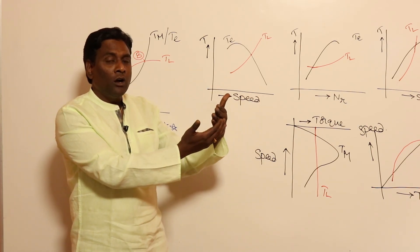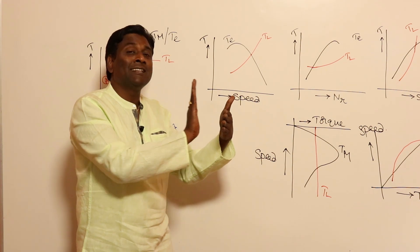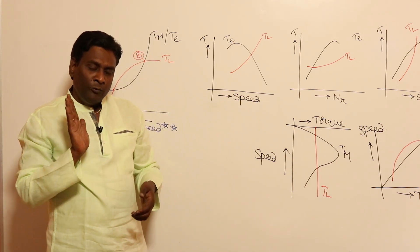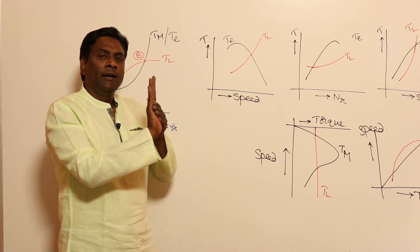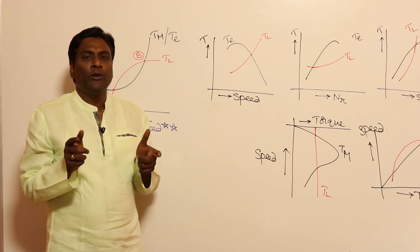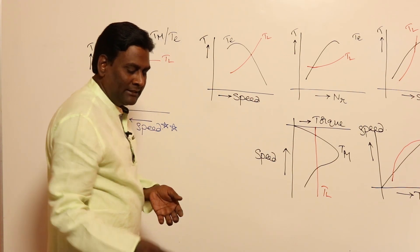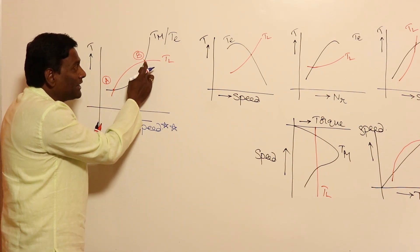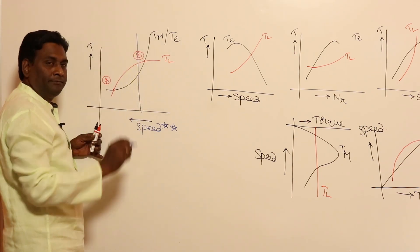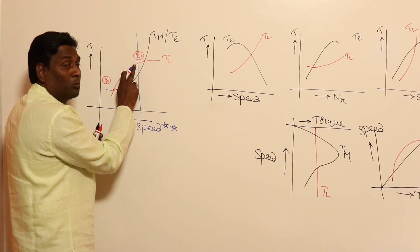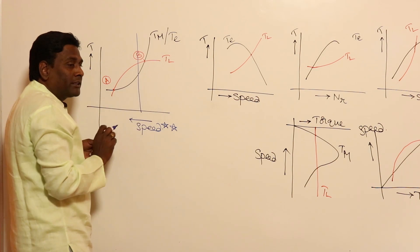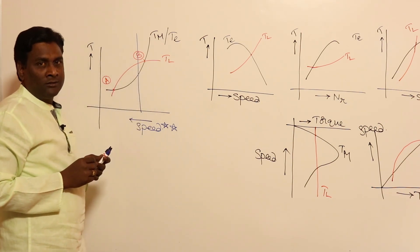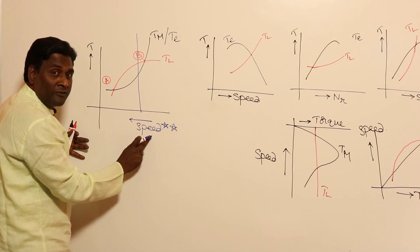If the load torque requirement is more and the motor developed torque is less — meaning opposition is more compared to the push — the motor will decelerate. When motor torque equals load torque at a given speed, it will rotate continuously at that speed. To find whether a point is stable, draw a line immediately after the junction point in the direction of increasing speed.